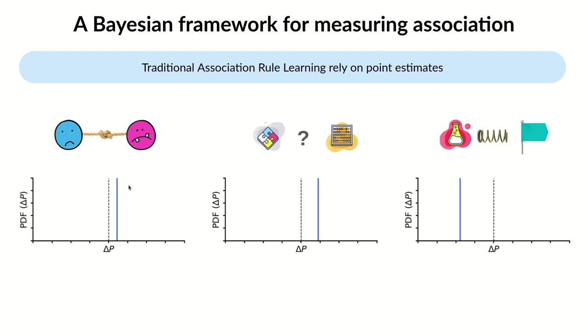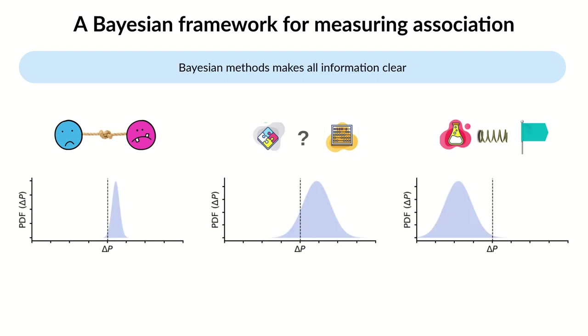In our method, instead of estimating a point estimate, we estimate the probability distribution function for the added value, so it becomes clear why a given case is considered independent.